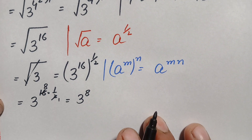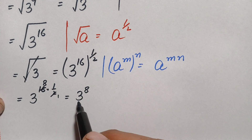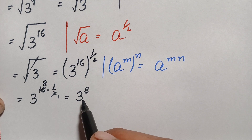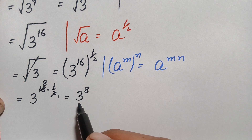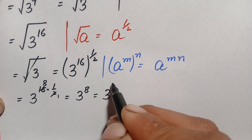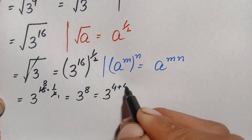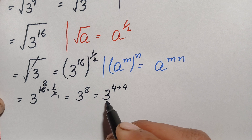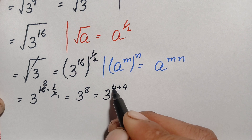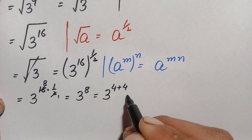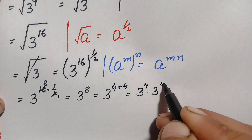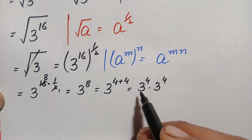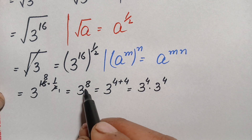We now find the value of 3 raised to the power 8. This means multiplying 3 eight times, which is a bit difficult directly. So we rewrite the exponent 8 as 4 plus 4, and use the identity a raised to the power m plus n equals a raised to the power m times a raised to the power n. This gives us 3 raised to the power 4, times 3 raised to the power 4.